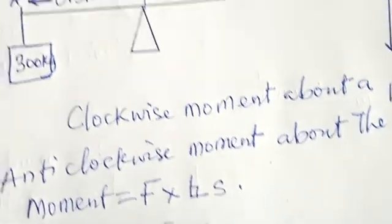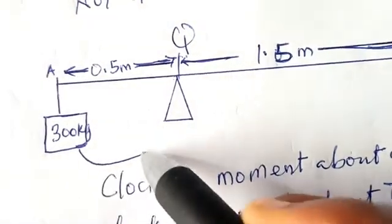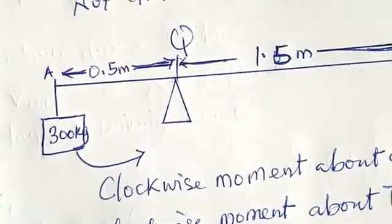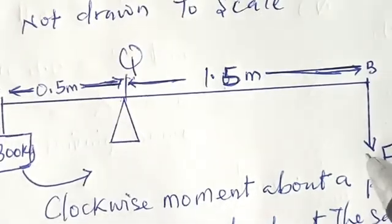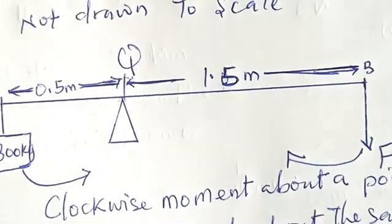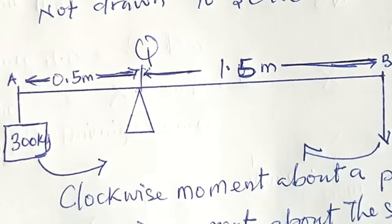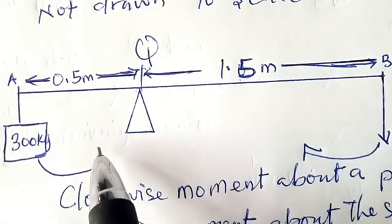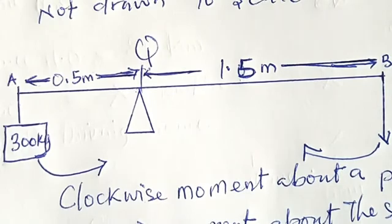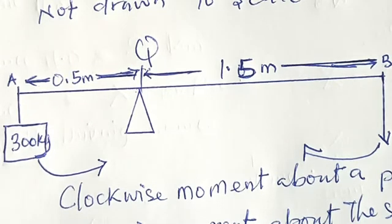Whether clockwise moment or anticlockwise moment, any one I choose—this one is anticlockwise. Whichever way, I can choose any of them, provided I am obeying the fact that force multiplied by perpendicular distance about a point. That is the only thing I need to do.